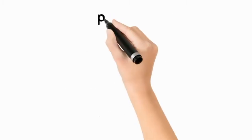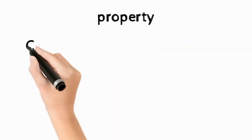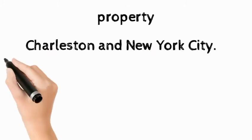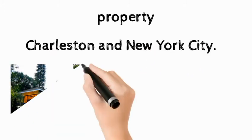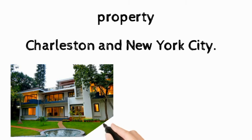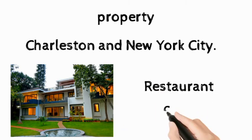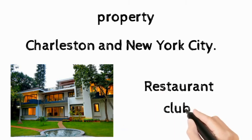Now let's talk about his property. Freeman has some houses in Charleston and New York City where he used to live with his luxury lifestyle. Apart from this, he also owns some restaurants and clubs.